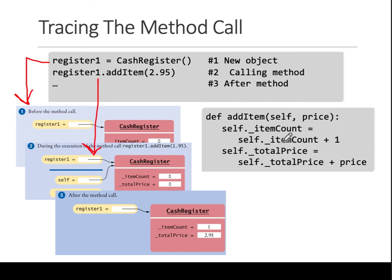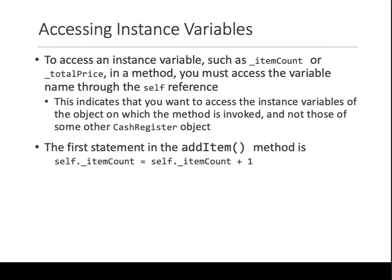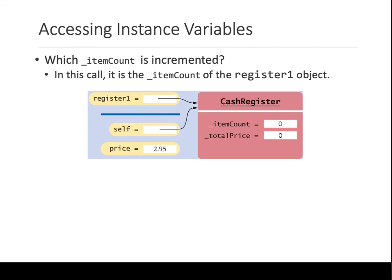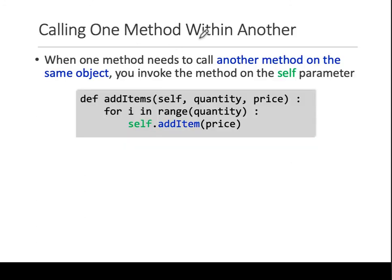Similarly, you can call functions within functions, or methods within methods. In the same class you have addItems - now you have a quantity, you have a price. What's happening? You have a for loop, and in the for loop you're calling addItem for this same self on which addItems is called. So you write self dot if you need to call another function. That is how you invoke the method with the self parameter.